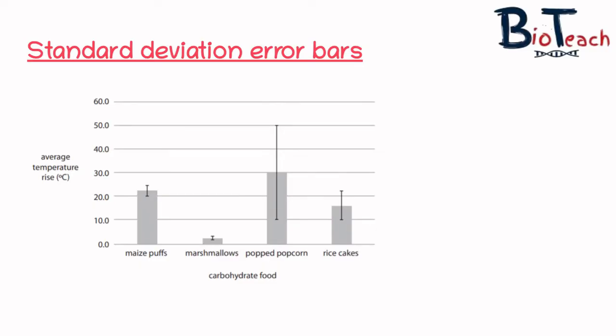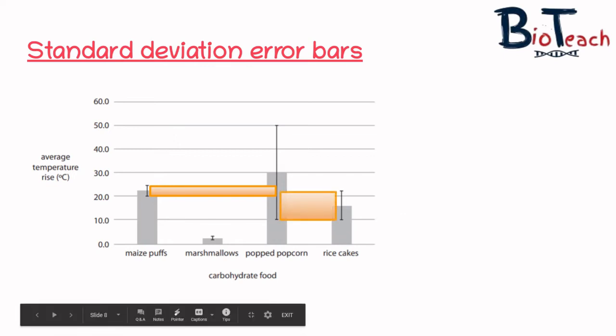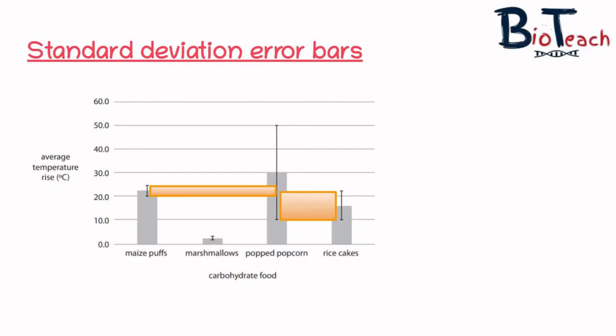The first thing you need to do is look for overlap. I've drawn a box showing the overlap between the standard deviation bars of maize puffs and popped popcorn. You will see there is no overlap between the maize puffs and the marshmallows. You will also see that there is an overlap between the rice cakes and the popped popcorn, but the overlap between the rice cakes and the popped popcorn is much larger than the overlap between the popcorn and the maize puffs.